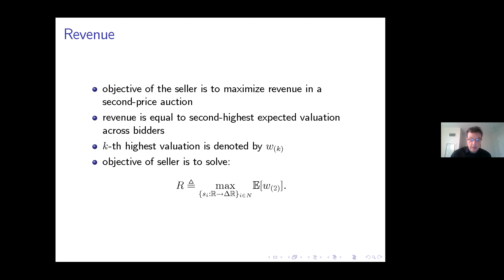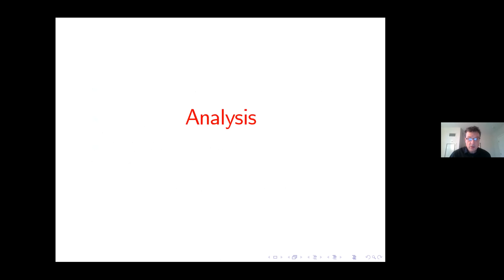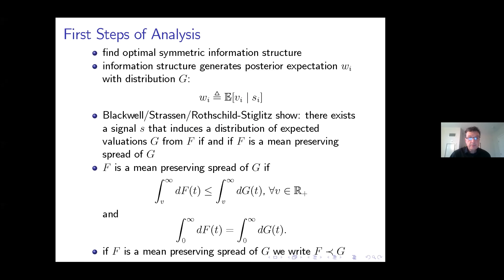More generally, the k-th highest valuation is ordered by W_k. We phrase everything in terms of this posterior expectation because bidders may not have access to the complete description of the value. The objective for the seller is really to maximize the expectation of the second order statistic. The seller can influence the second order statistic by choosing an information structure that in turn generates the posterior expectation of the bids. Rephrasing: we attempt here to find the optimal symmetric information structure — formally, a distribution G over the posterior expectation.